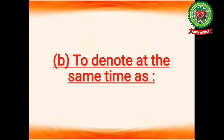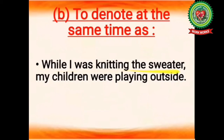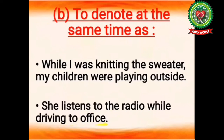While is also used as a conjunction in the sense of 'at the same time as'. Example: while I was knitting the sweater, my children were playing outside — meaning at the same time as I was knitting, my children were playing. Another example: she listens to the radio while driving to office — meaning when she was driving to office, at the same time she was listening to the radio.